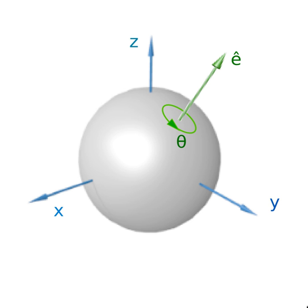Rotations about different points, in general, do not commute. Any two-dimensional direct motion is either a translation or a rotation. See Euclidean plane isometry for details.